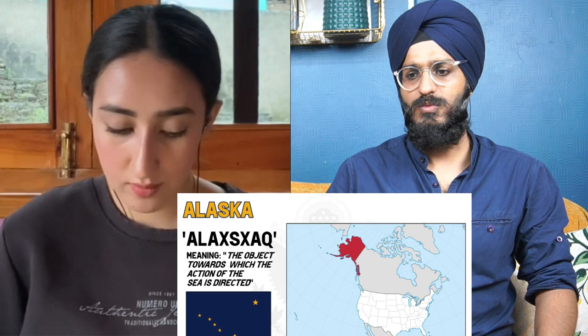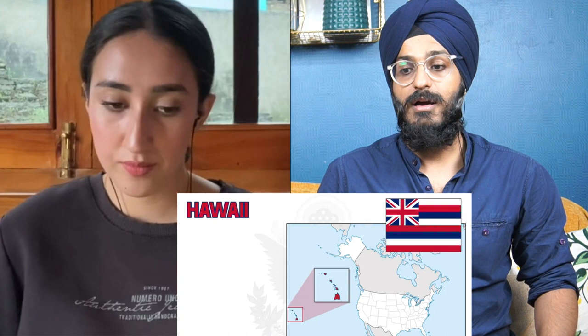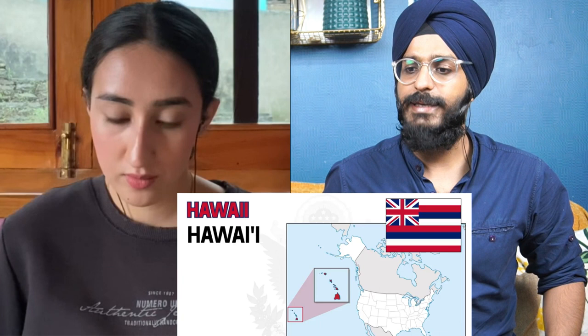Starting with the two non-contiguous states: Alaska's name comes from the Aleut language. They used the word 'Alaxsxaq' to describe 'mainland' or literally 'the object towards which the action of the sea is directed' — the place where the waves hit. Alaska was first colonized by the Russian Empire, who then sold it to the United States, baptizing the colony with this native name in 1666.